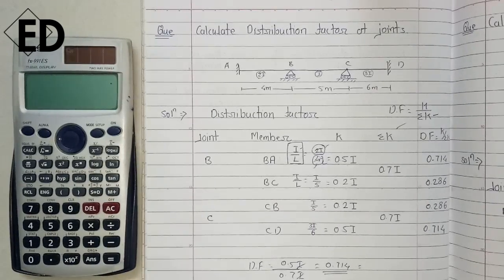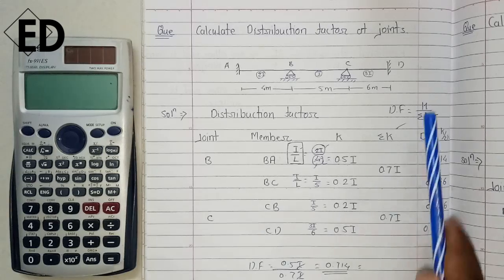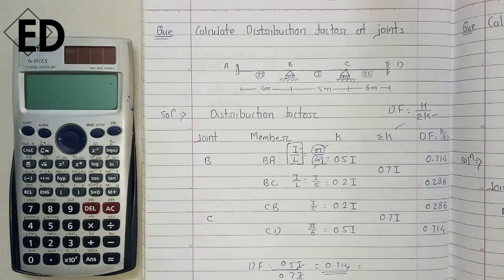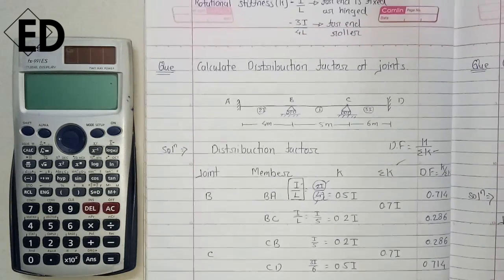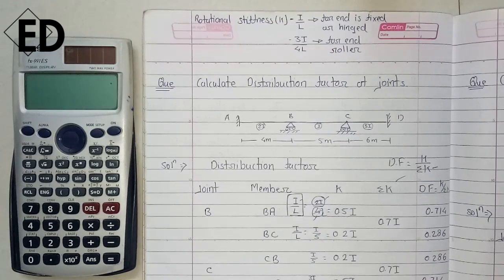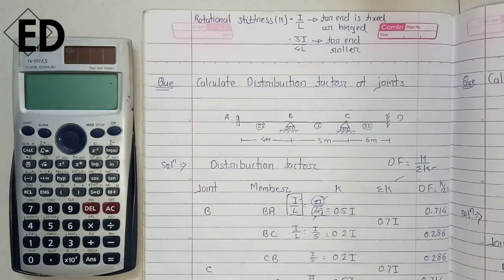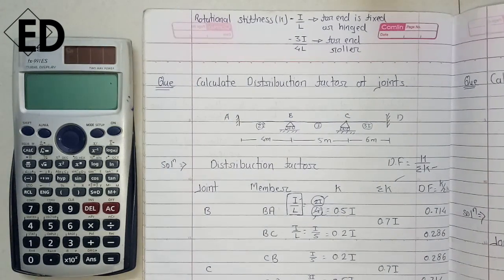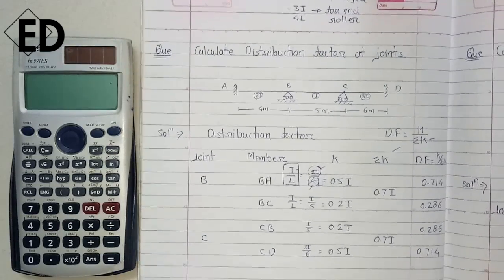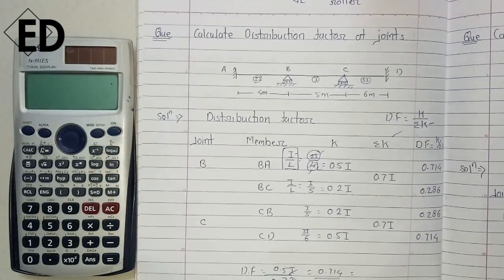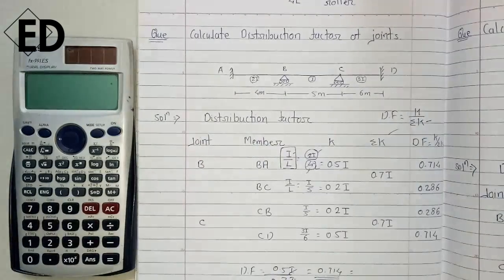In this video we are going to see how to calculate the distribution factor for a joint. We take a simple example for you to understand. Before calculating, you have to remember two formulas: rotational stiffness when the far end is fixed is I/L, and when the other end is a roller or hinge, it is (3/4)(I/L).